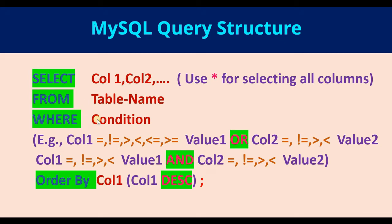Supposing you want to select rows which satisfy one condition or another, we use the OR statement. On executing this query, we get columns from the table satisfying either condition. If we want both conditions to be satisfied, we use AND — only those rows satisfying both conditions will be displayed.